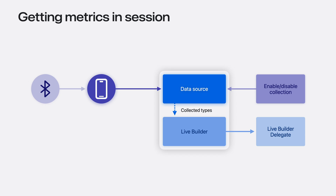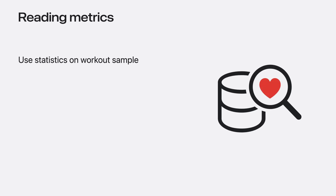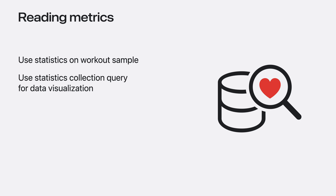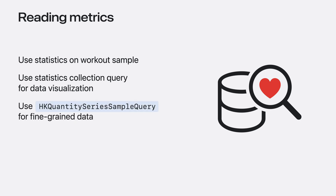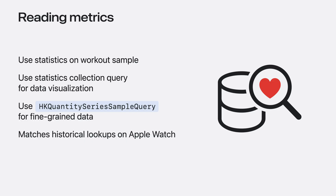For example, collecting dietary water during a workout: your app will call enable collection, and as the workout is running, add the measurement as a sample to the health database, and the data source will automatically pass those samples to your live builder. Now that you know how to get metrics in session, let's quickly cover how to read workout metrics after the workout has been saved. Start by using statistics on the workout object to display a summary. If you want to chart metrics over the duration of the workout, use a statistics collection query with your desired interval. If your app needs fine-grained data, keep in mind that quantity samples associated with the workout may have a count greater than one. This indicates that samples have finer-grained data, which can be accessed using an HKQuantitySeriesSampleQuery instead. This will also be the case with workouts saved in iOS.